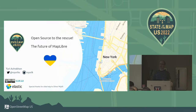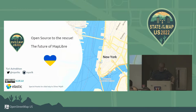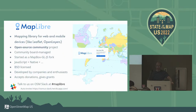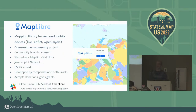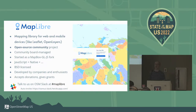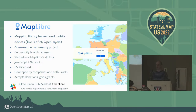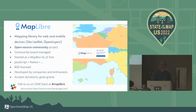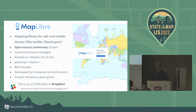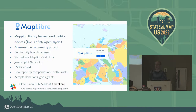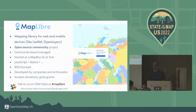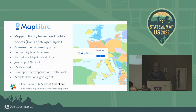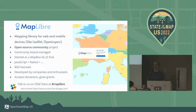How many of you have actually heard of MapLibre? So very briefly, what is MapLibre? MapLibre is a mapping library - actually a set of libraries related to visualizing maps. It's an open-source community project, and it all started with Mapbox. We love Mapbox. It's freely BSD licensed and it's developed by contributors and companies.